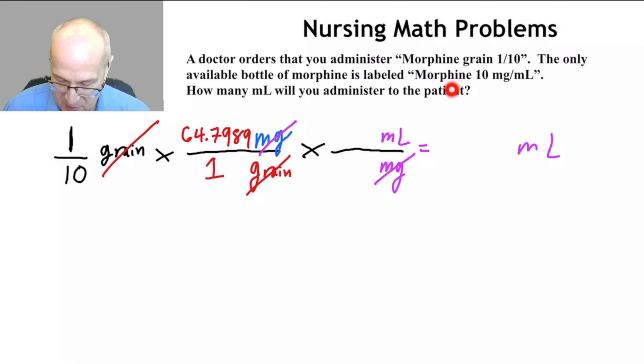We know from here there are 10 milligrams per one milliliter of morphine solution. So the 10 will go down here and the one will go up there.